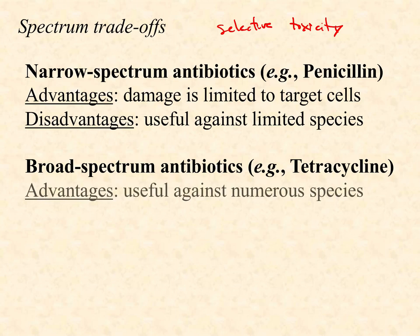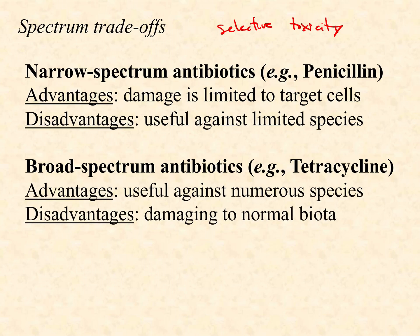What about a broad spectrum drug? The advantage is that it's useful against numerous species — like in the situation where you really don't know what the pathogen is and time is critical. You may use something like tetracycline as quickly as possible, because it's going to hit gram-negatives, gram-positives, chlamydias and rickettsias. But the disadvantage is that it's going to damage the normal microbiome — the bacteria living on and in your patient — and potentially there's going to be some toxicity to your patient as well, because it's less selective in its toxicity. Narrow spectrum antibiotics are more selective; broad spectrum antibiotics are less selective.